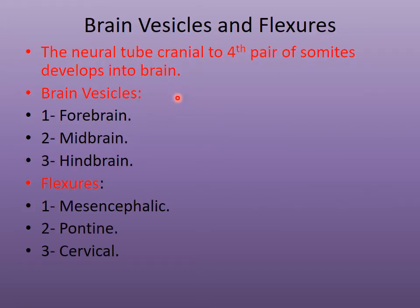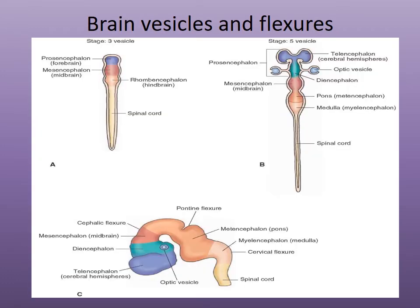As we have discussed, the neural tube cranial to the fourth pair of somites develops into the brain vesicles: the forebrain, midbrain, and hindbrain. Three flexures are formed in the developing embryo — the mesencephalic, the pontine, and the cervical flexures. The neural tube caudal to the fourth pair of somites develops into the spinal cord, while cranial to that develops into the three brain vesicles: the rhombencephalon, mesencephalon, and prosencephalon.